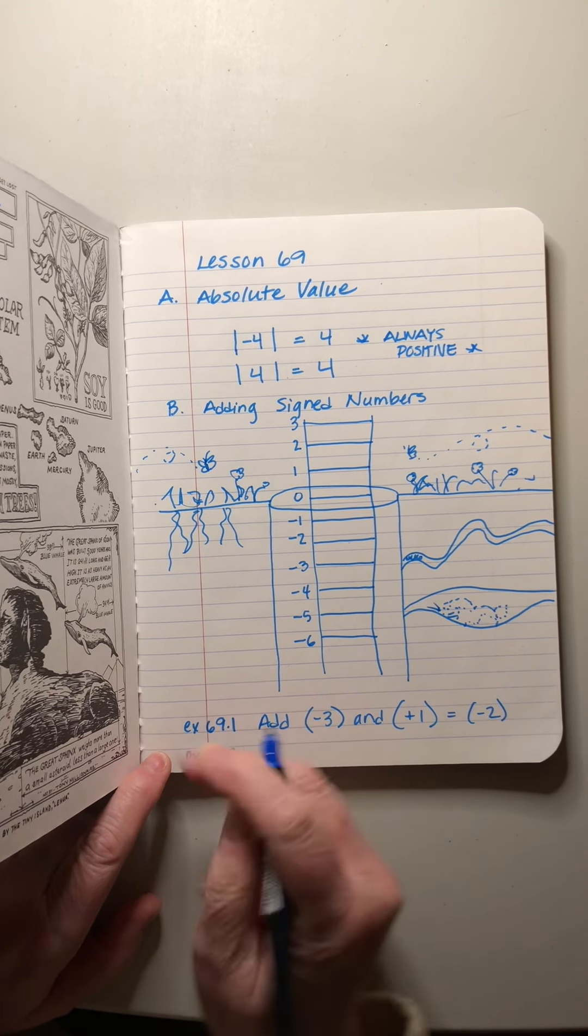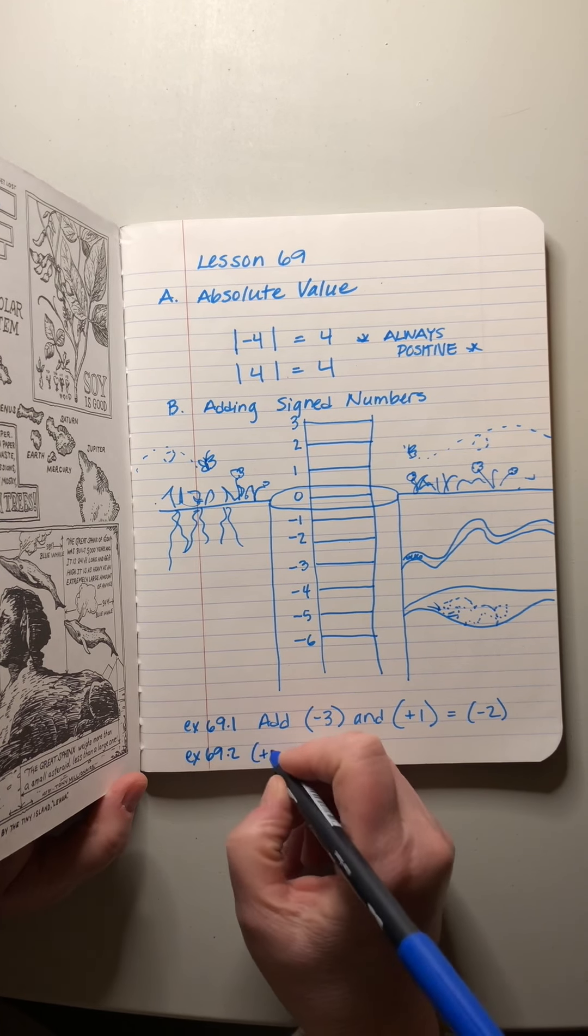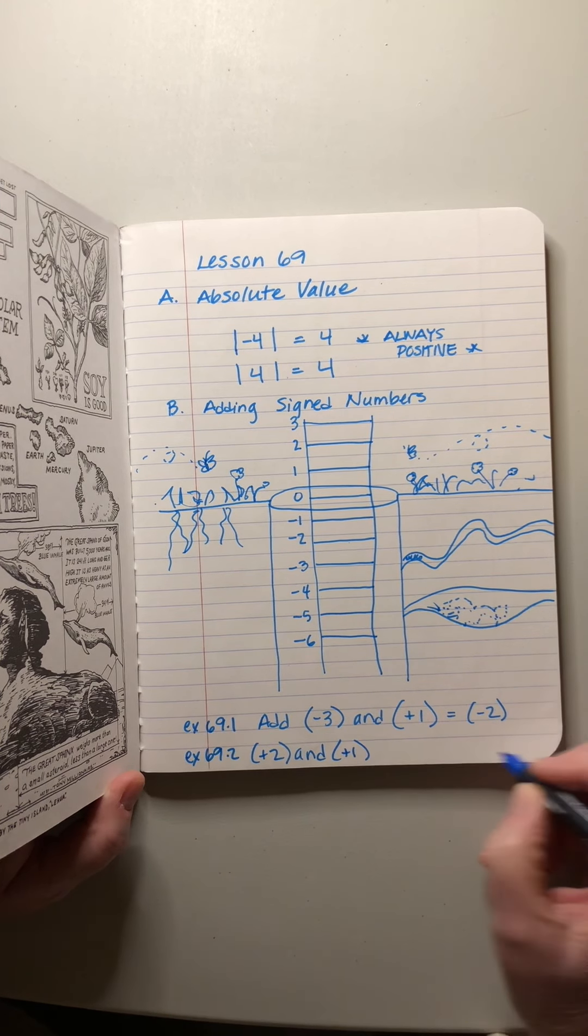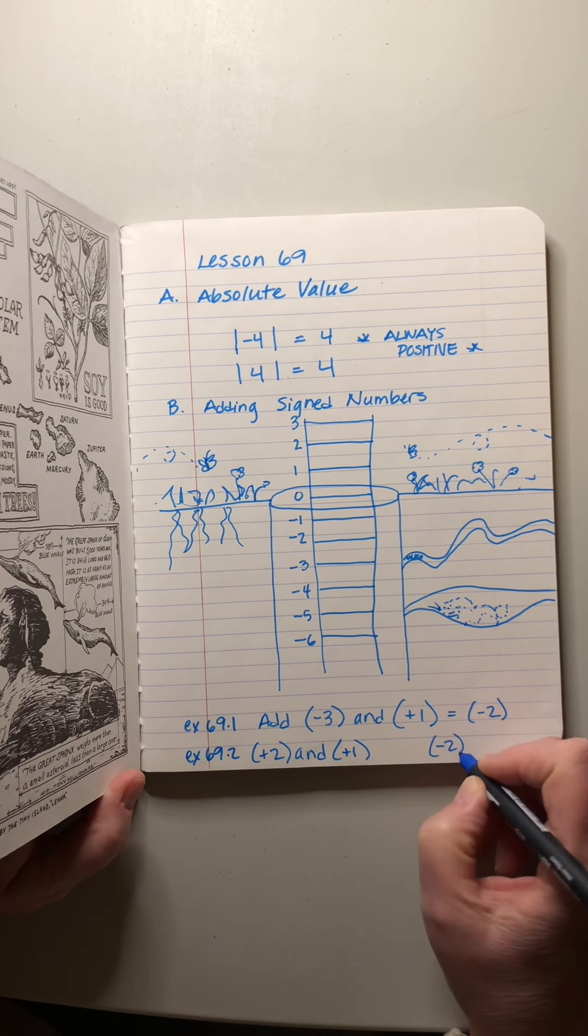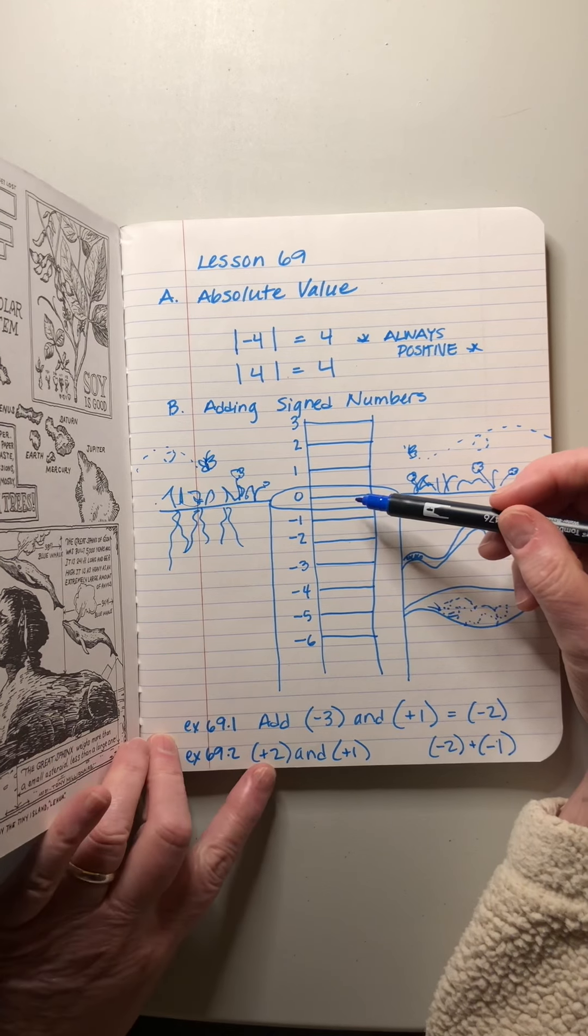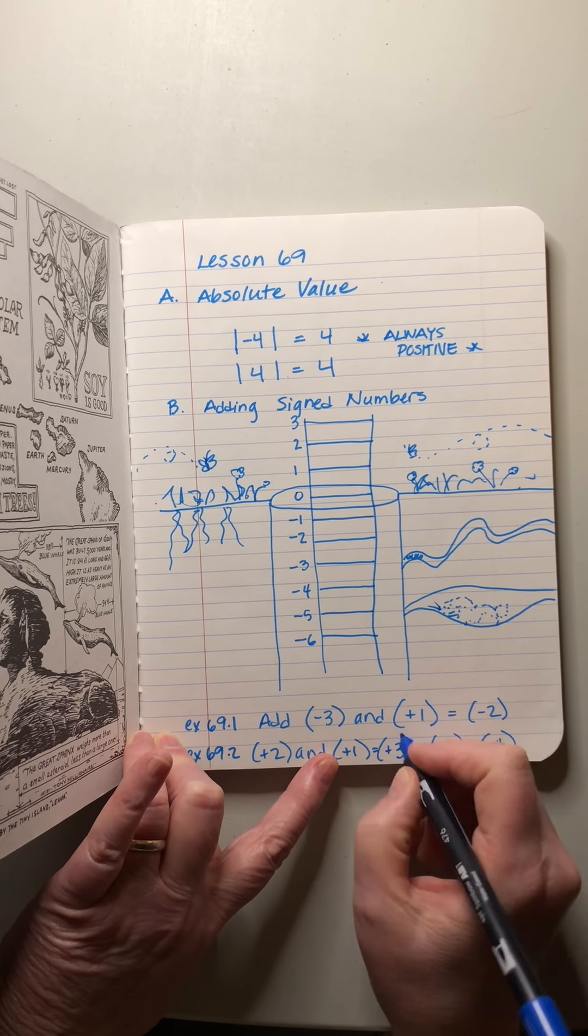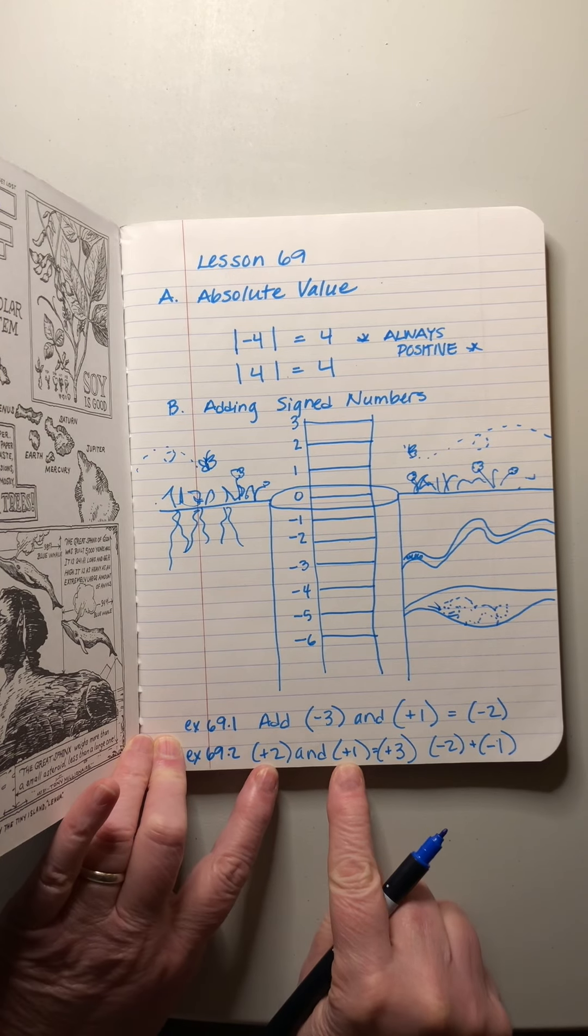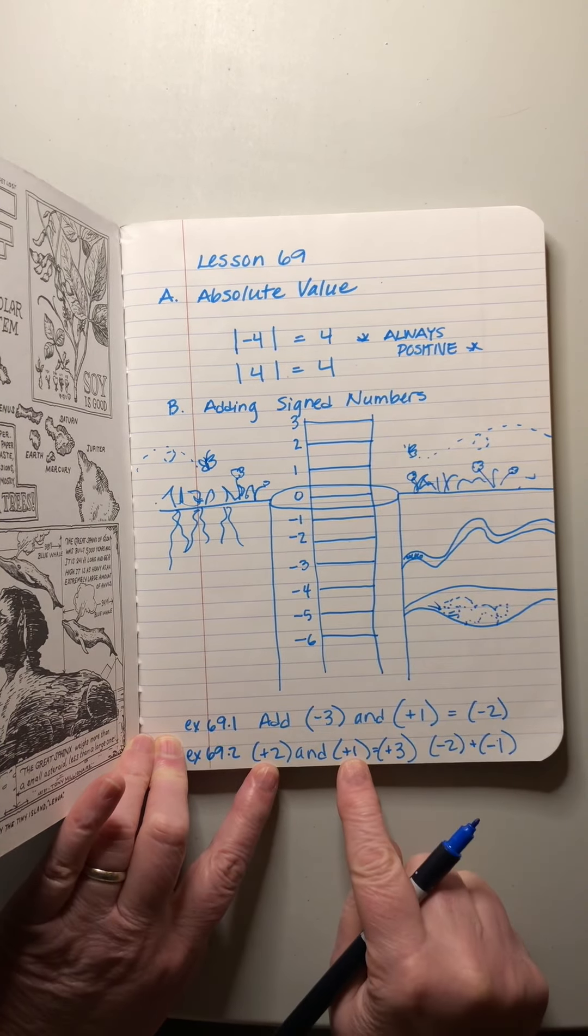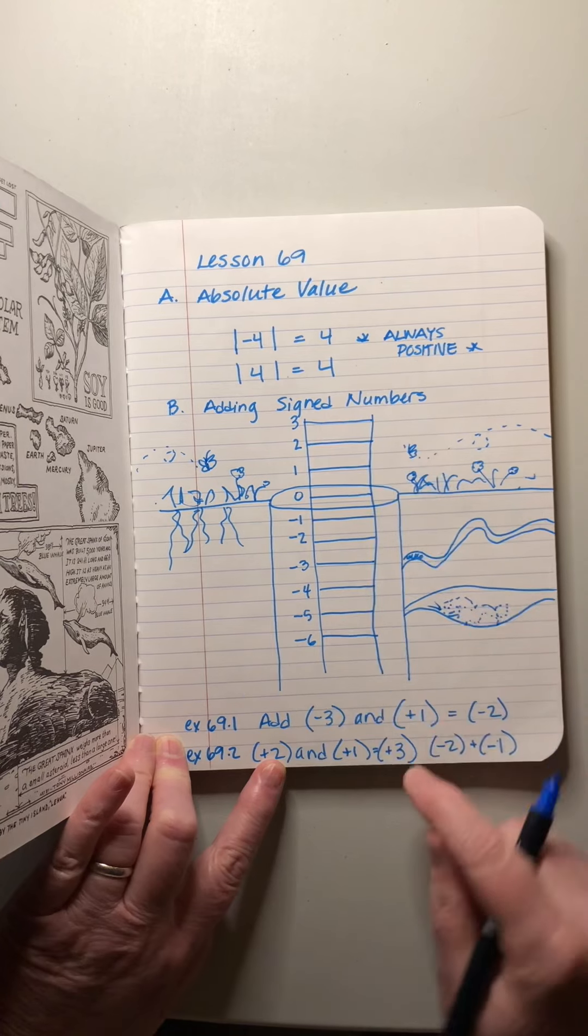And then this one, 69.2, it says we've got more to do. All right. These are two separate problems. Actually, we're supposed to add plus two and plus one, and then we're supposed to add negative two and negative one. So let's do the positives first. We jump on at zero. We go up two, one, two, and then we go up one more one. So we end at positive three. So what we noticed is that when both are positives, we go up and up, right? In the same direction. And remember, this doesn't mean go to step number positive two. It means go two steps in the positive direction. So we climb up two, and then we climb up one more, and we end up at positive three.